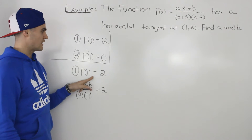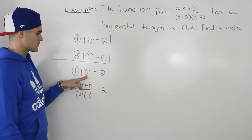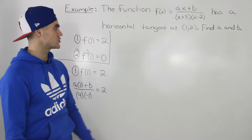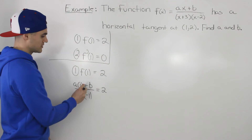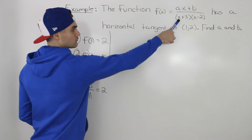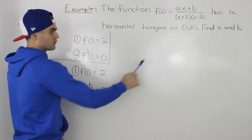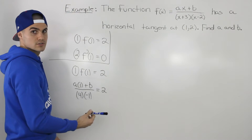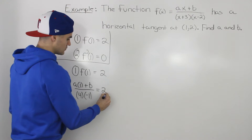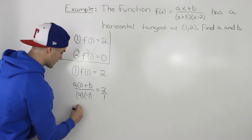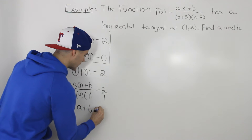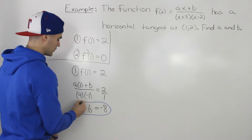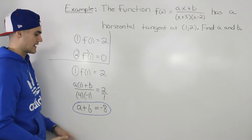Let's work with the first equation, f(1) = 2. We plug in x = 1 into the original function: a times one plus b, all over (1+3)(1-2), which gives us (a + b) over (4)(-1). Setting that equal to two and cross-multiplying, we get a + b = -8. That is our first equation.